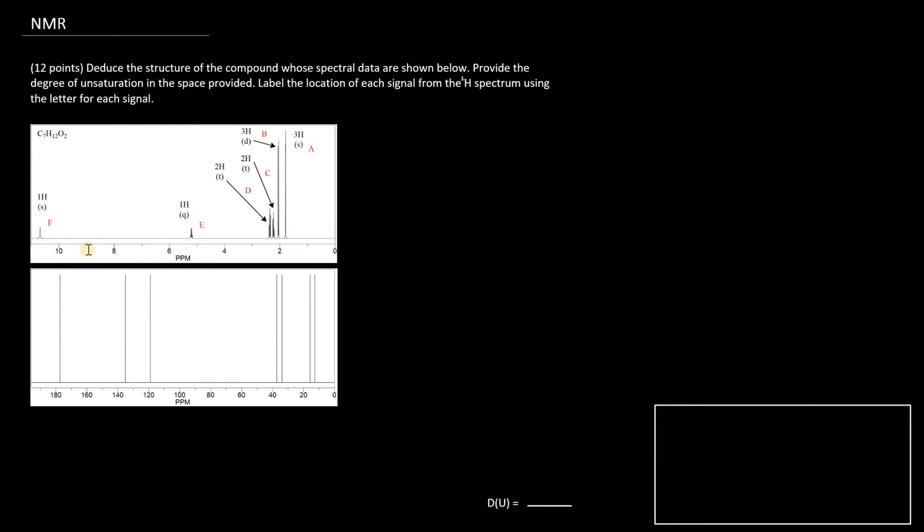The first thing that strikes me is the 1H singlet here, which is above 10 parts per million, probably close to 11. Signal E, close to 5 parts per million. Perhaps that's an alkene or aromatic compound.